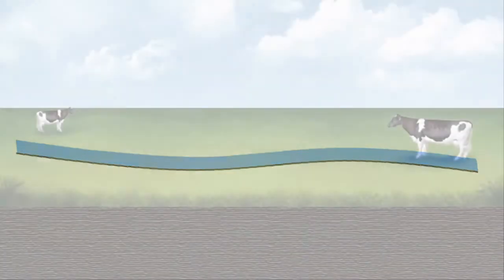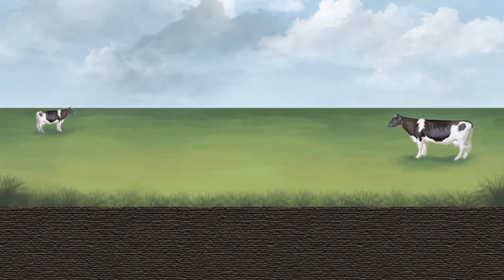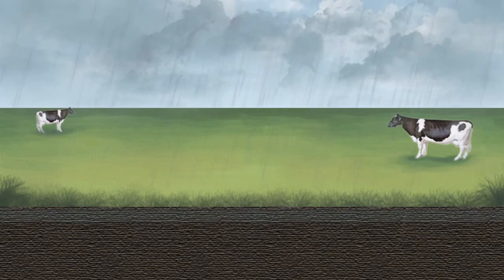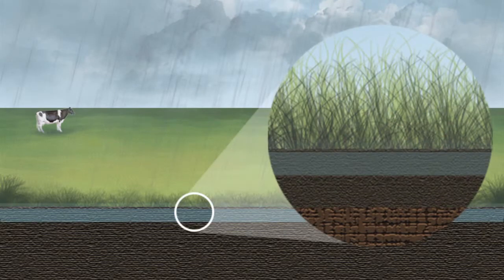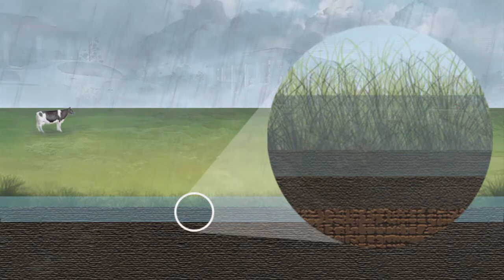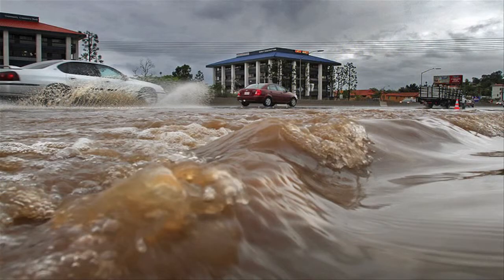Where there are no well-defined channels, flood waters may spread out over a large area at a somewhat uniform depth in what is called sheet flow. Sheet flows typically occur on relatively flat land after an intense or prolonged rainfall when soils are already at or near saturation. During sheet flow, the flood waters move downhill and cover a wide area.